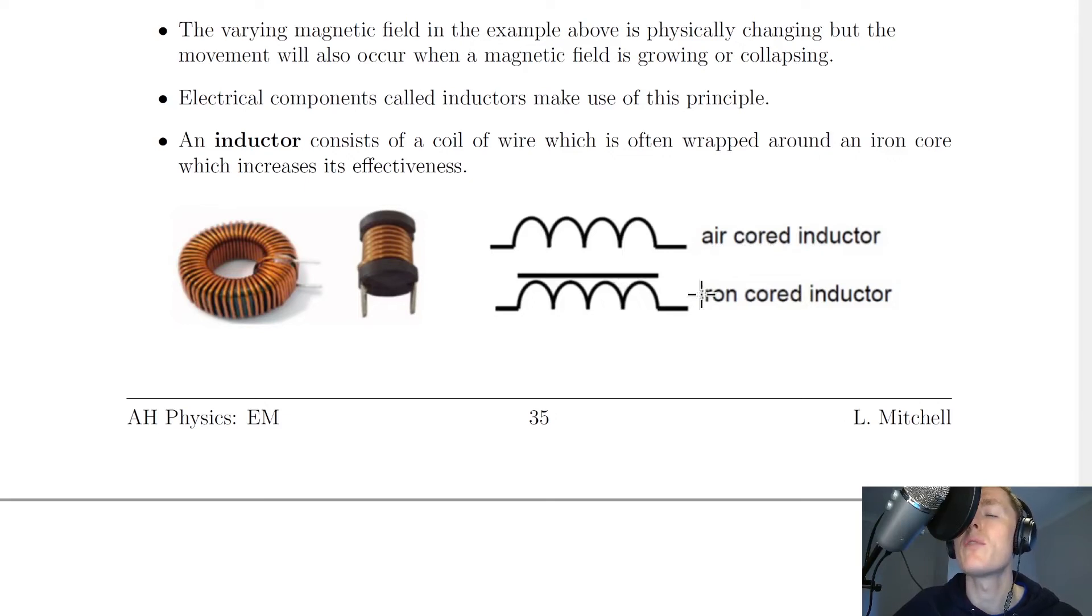However, if there's no iron core for the inductor, then we simply call it an air core inductor, which looks like this without the straight line. So you might see either of these in circuit diagrams containing inductors.